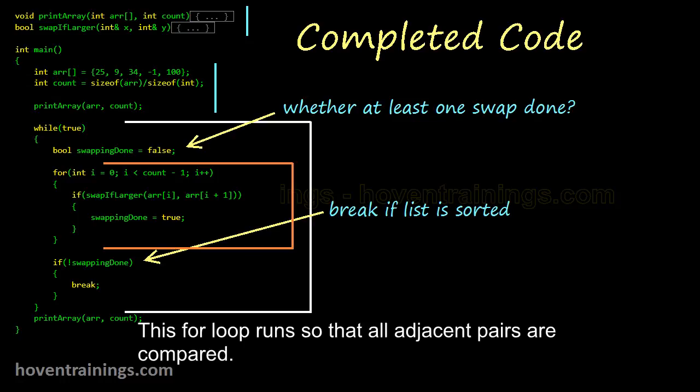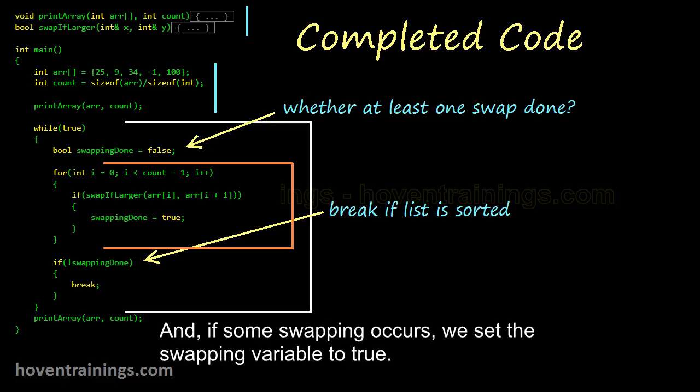This for loop runs so that all adjacent pairs are compared. And if some swapping occurs, we set the swapping variable to true.